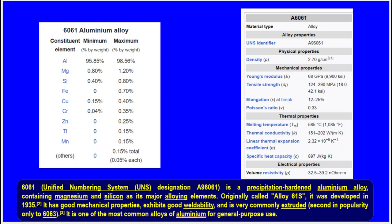The 6061 aluminum alloy is rich in magnesium, silicon, and iron, with trace amounts of copper, chromium, zinc, titanium, and manganese. It has good physical, mechanical, thermal, and electrical properties. Its UNS designation is A96061 — a precipitation-hardened aluminum alloy. Originally called alloy 61S, it was developed in 1935. It has good mechanical properties, excellent weldability, and is very commonly extruded, second in popularity only to 6063. It is one of the most common general-purpose aluminum alloys and is highly corrosion resistant.